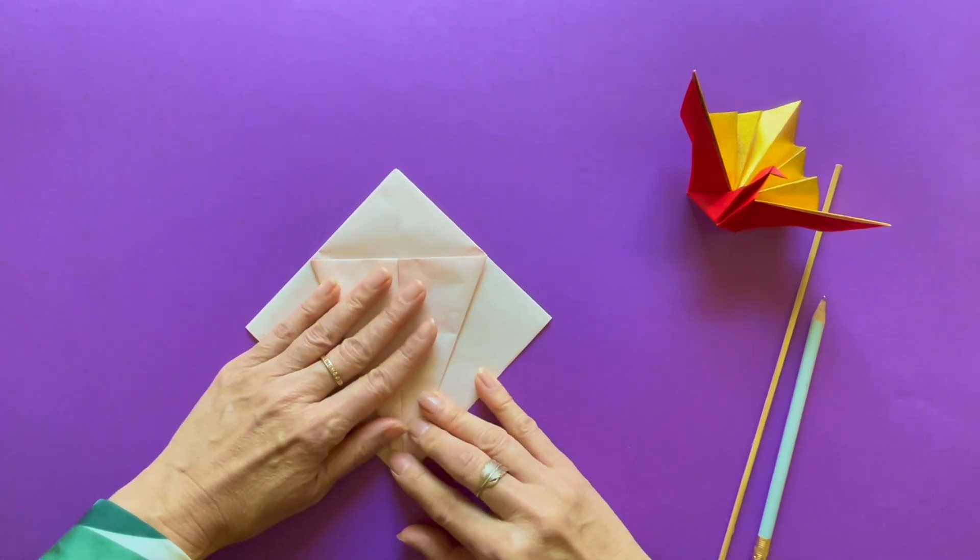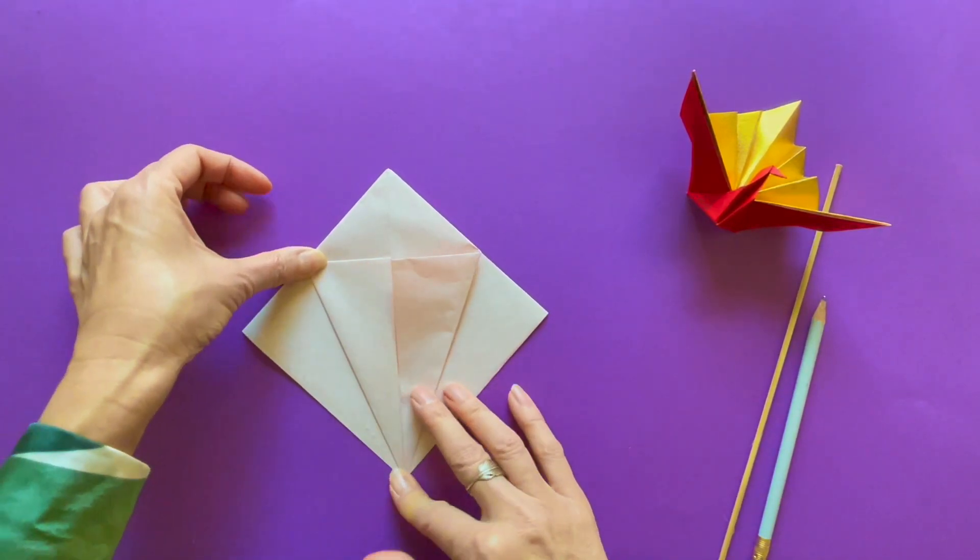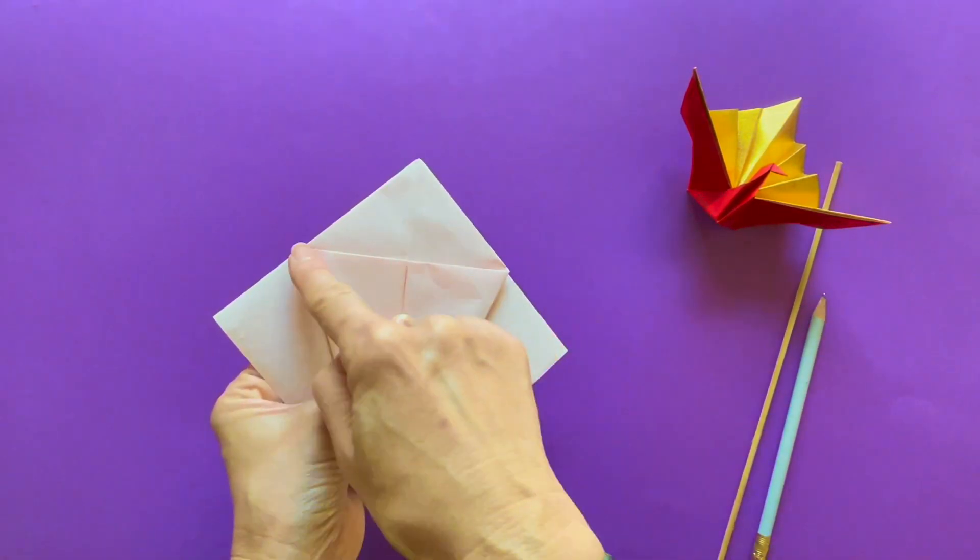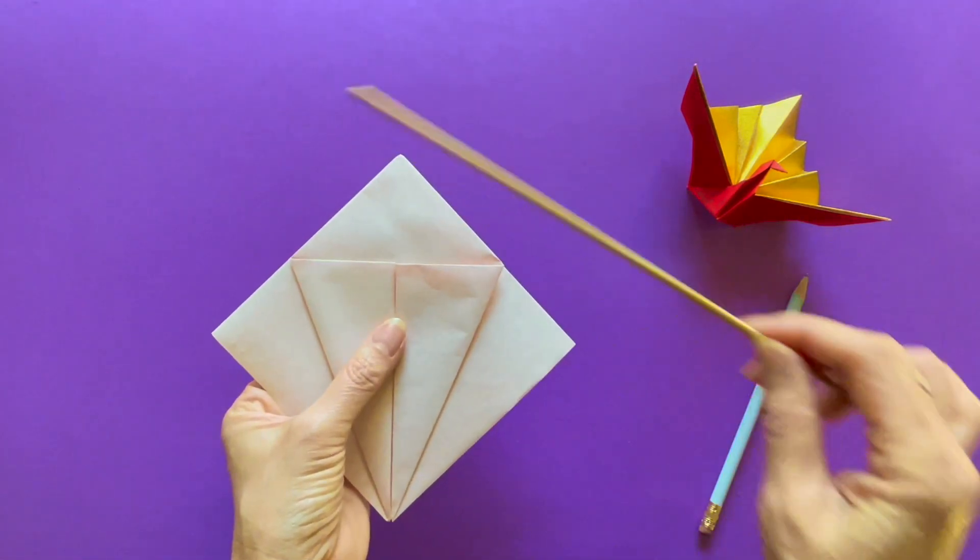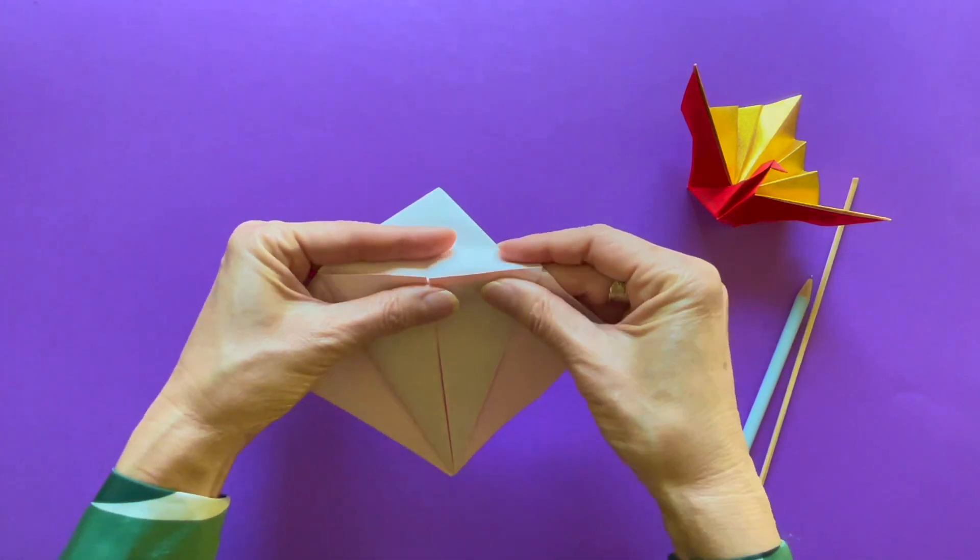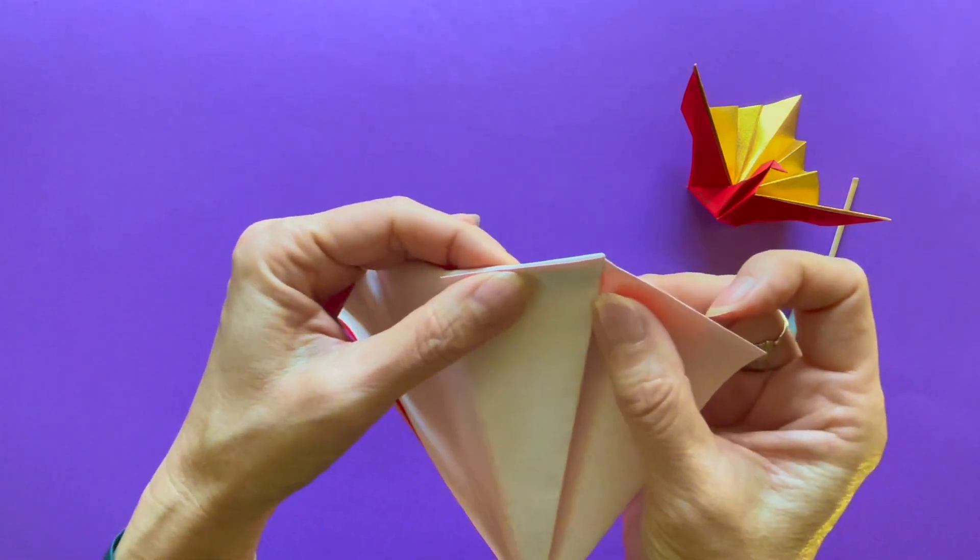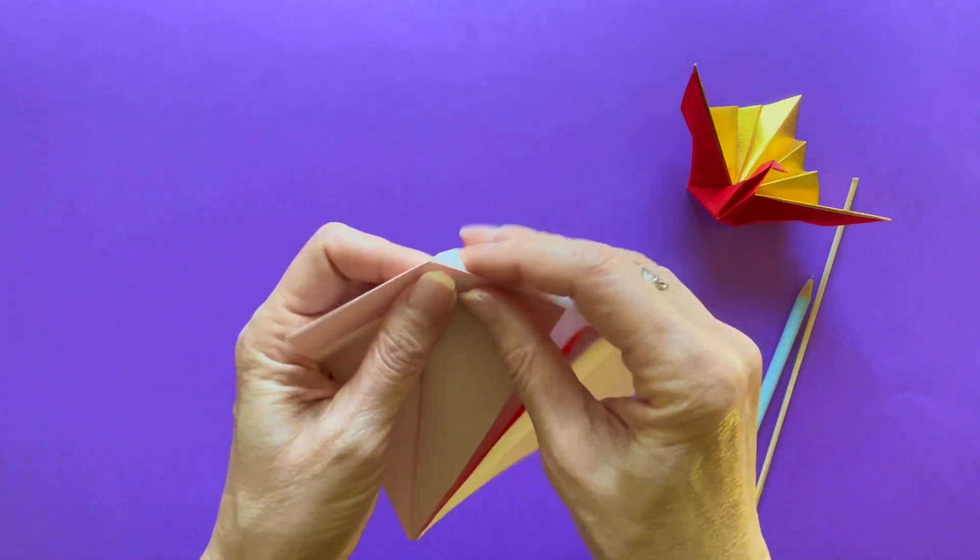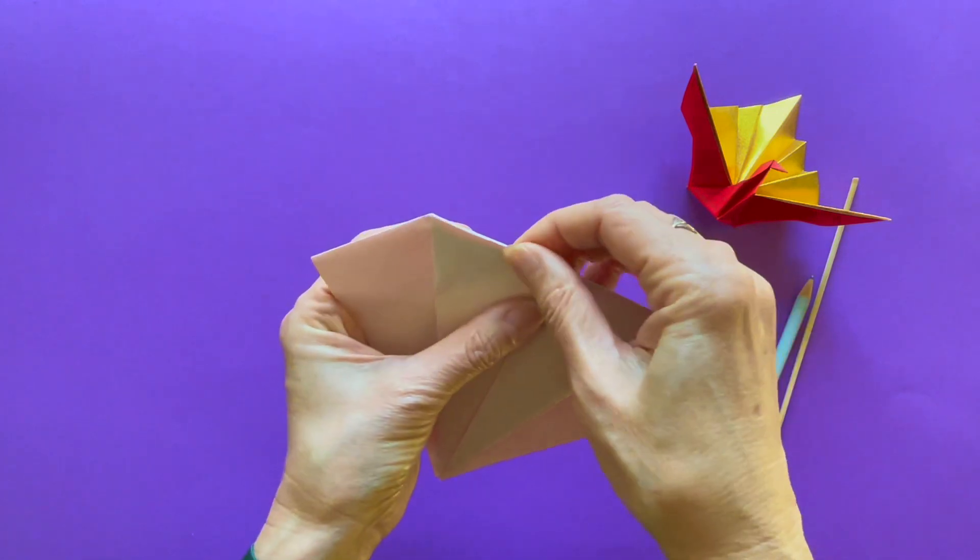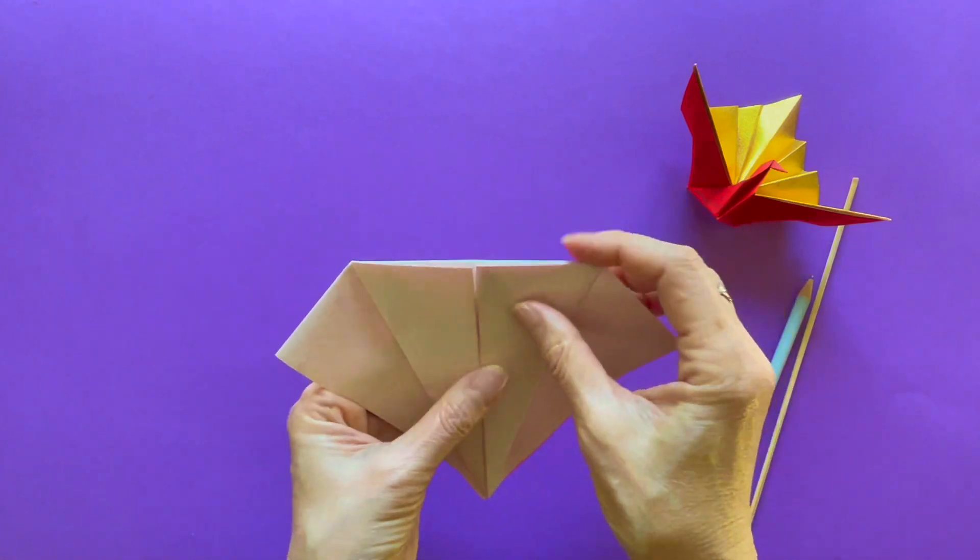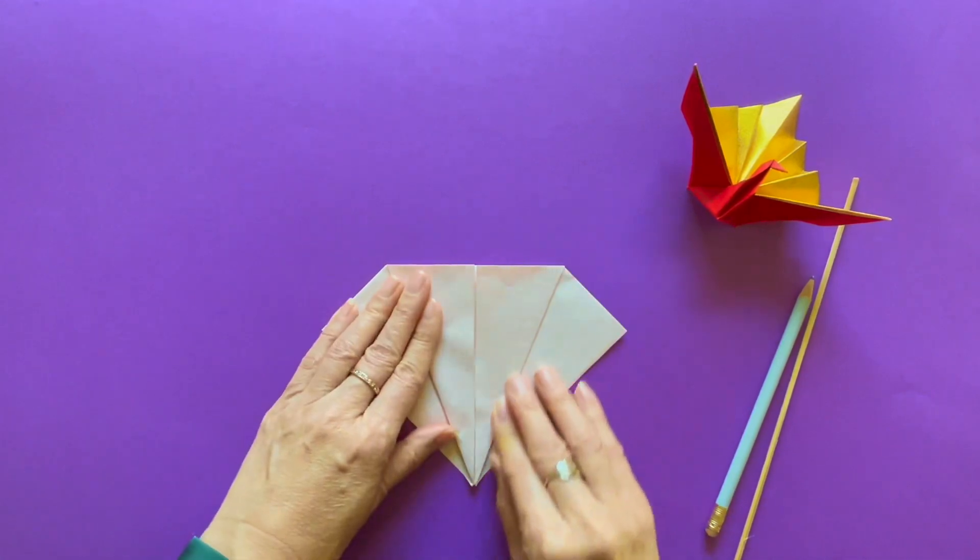And now it looks like a kite. Next folding happens on this line of the shape. And the crease aligns with this edge. Fold to the back side. And please make sure not leaving any space on top. It's all gone to the back.